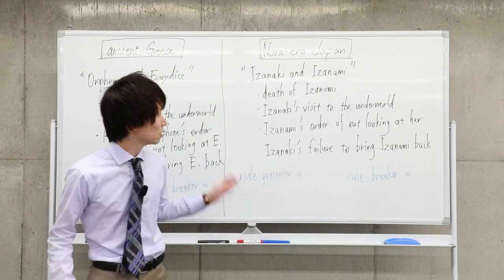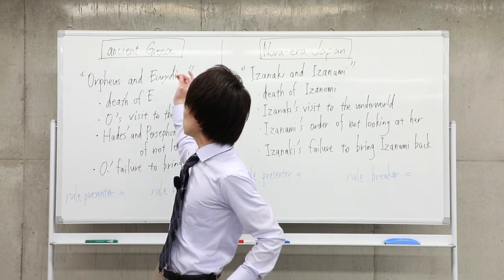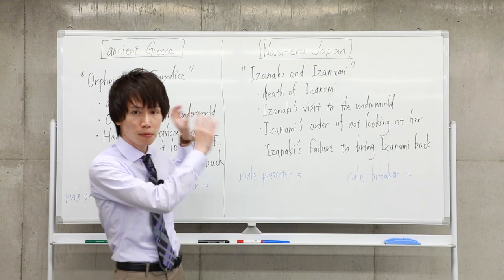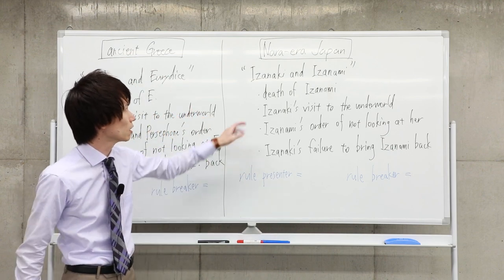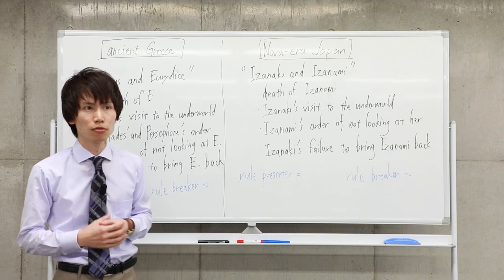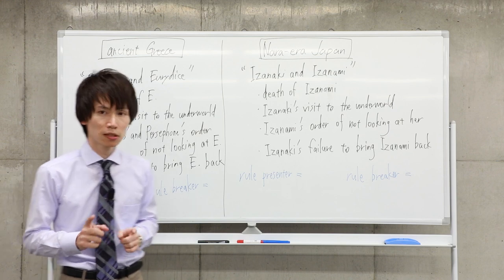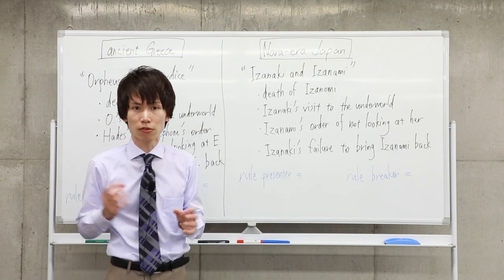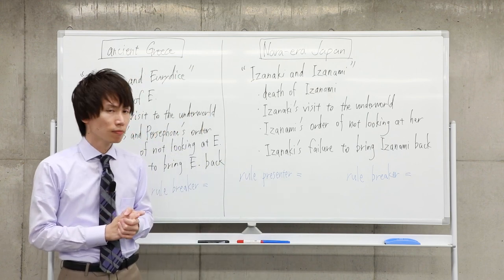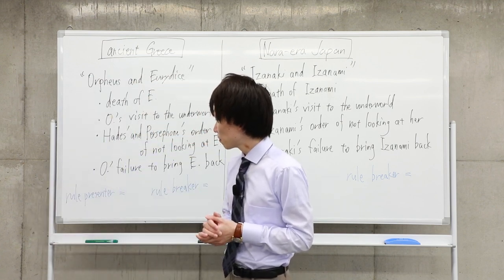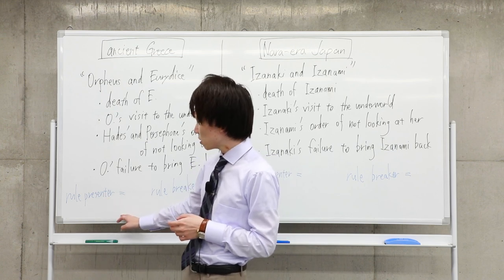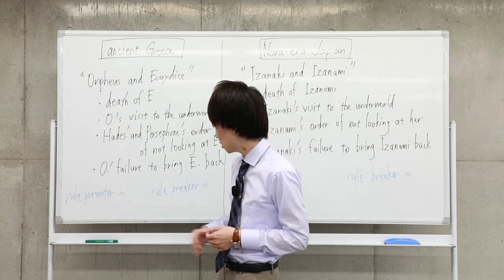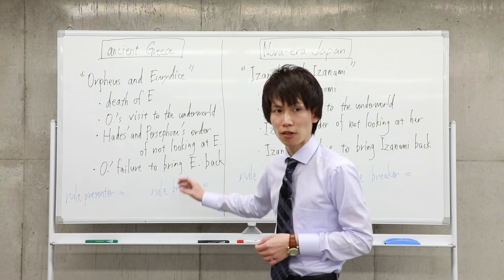So what do you think about these two stories? As I said, these two stories share the same character type, husband and wife, and same story plot, same development of story. A husband failing to bring his wife back from the underworld. But I think the impression these two stories generate are different from each other. The reason lies in the way the rule presenter and rule breaker are presented. So let's look at this aspect.